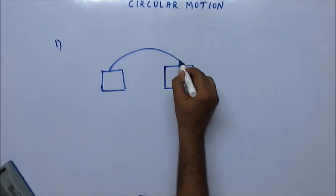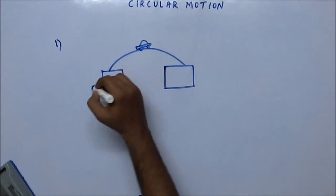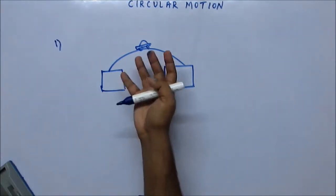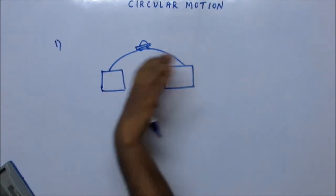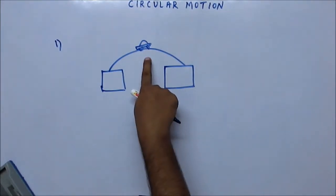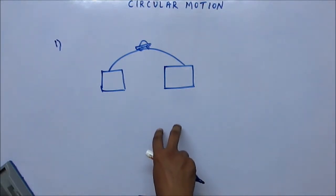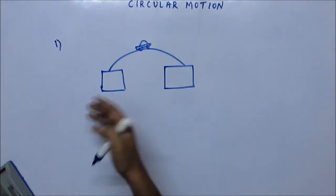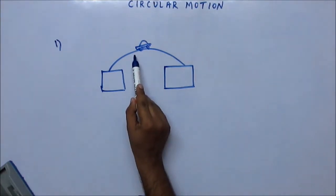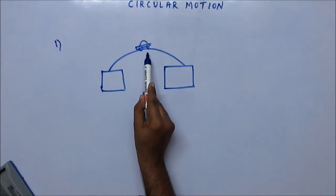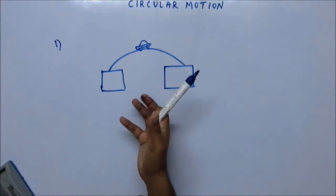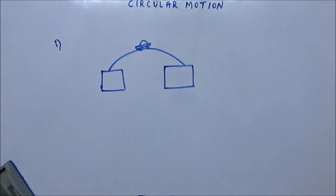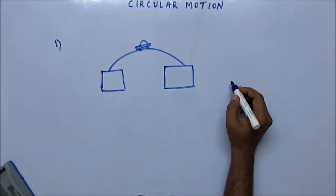Let's do a problem. Suppose there is a bridge and a car going over it in circular motion. The question is to show that the weight measured for this car at the top of the bridge is less than the weight measured when the car is stationary on level ground. If you have a load cell or any weighing mechanism at the top, its reading will be less than when the car is stationary.